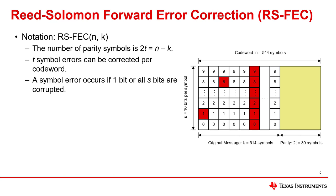RSFEC is a block-based error correction encoding scheme. Data is arranged into s-bit symbols and n-symbol code words, where k symbols make up the original message and n minus k symbols are added for parity. The RSFEC encoding scheme allows for t symbol errors to be corrected per code word, where the number of parity symbols is two times t. It's important to note that a symbol error occurs if one bit or all s bits are corrupted, so RSFEC is particularly good at correcting single bit errors and burst errors.